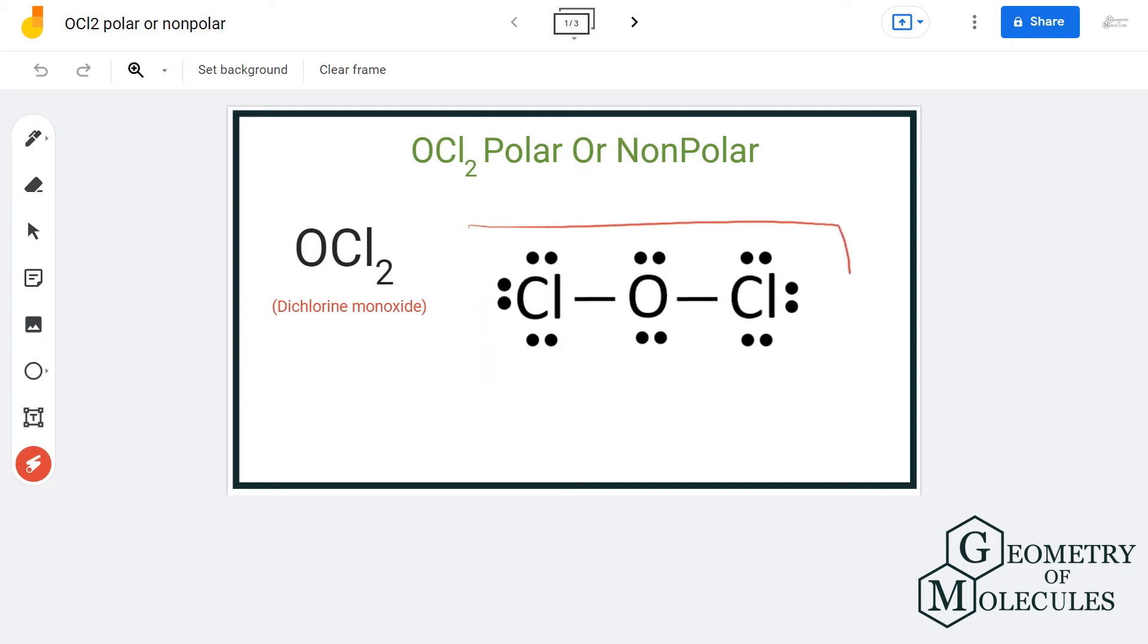Here is the Lewis structure of OCl2, or dichlorine monoxide, in which the oxygen atom is forming two single bonds with two chlorine atoms, but it also has two lone pairs of electrons.